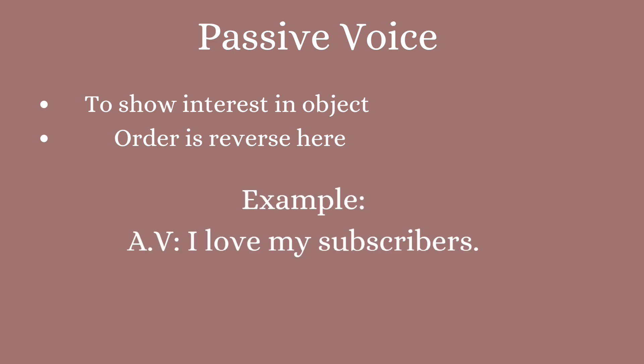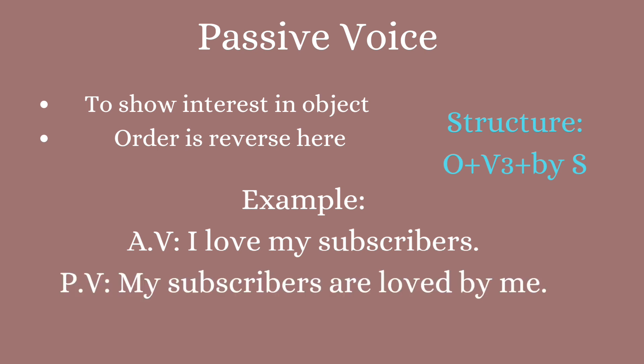'I love my subscribers' — here 'I' was performing the action and the sentence structure was subject plus verb plus object. But in passive, the object comes first and the subject is added after 'by.' So the structure will be: object plus verb plus 'by' plus subject.